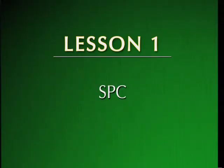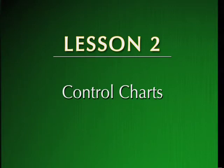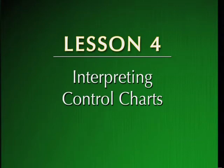This module is divided into four lessons. Lesson one introduces the concept of statistical process control. Lesson two introduces the characteristics of control charts. Lesson three introduces several types of control charts. And lesson four gives you guidelines for interpreting those control charts.